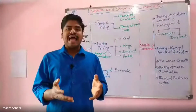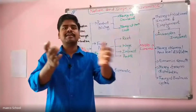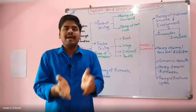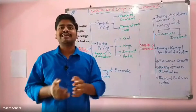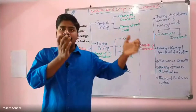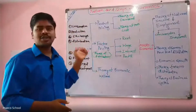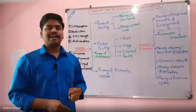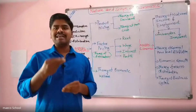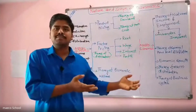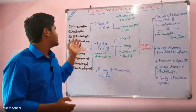Coming to production — the factors are land, labor, capital, and entrepreneur. There is a technical relationship between inputs and output, which is called the production function. Production is based on consumption and demand.